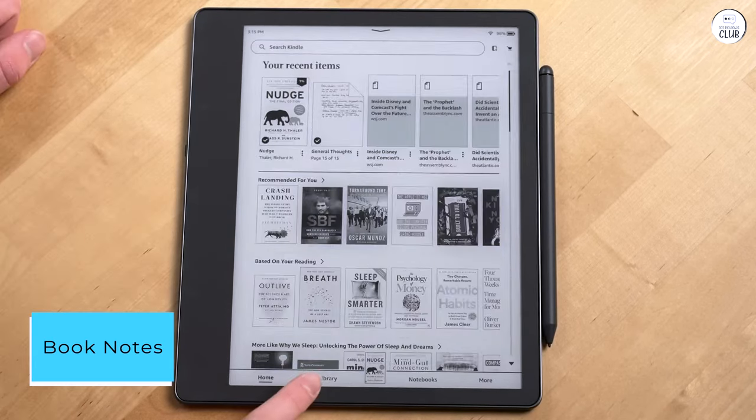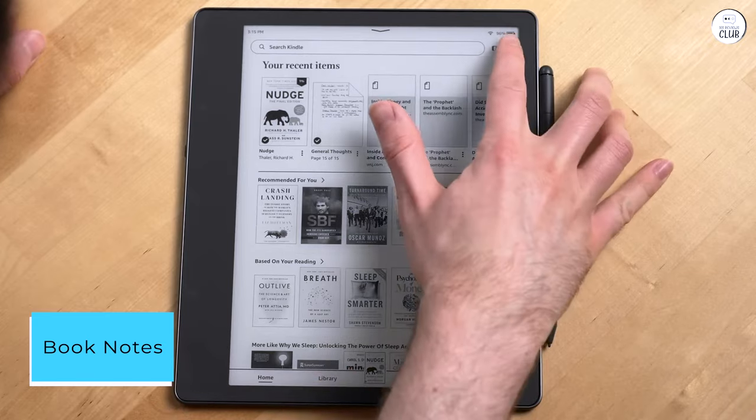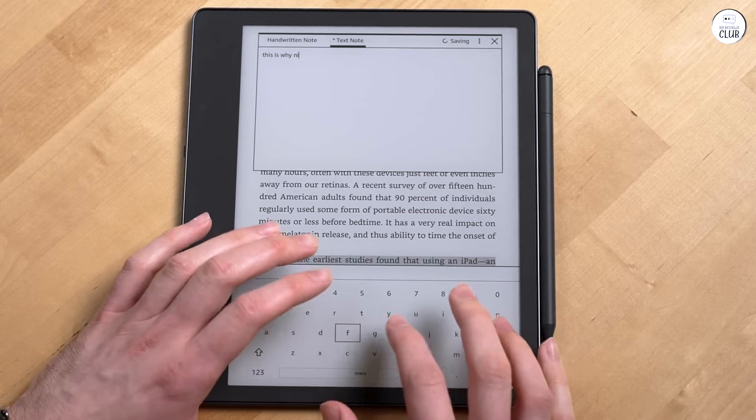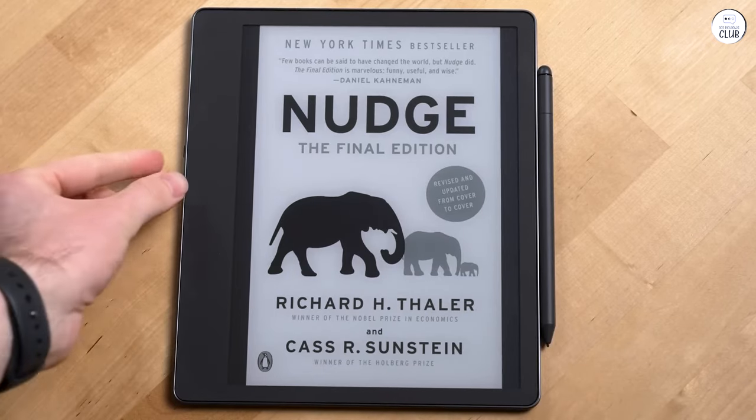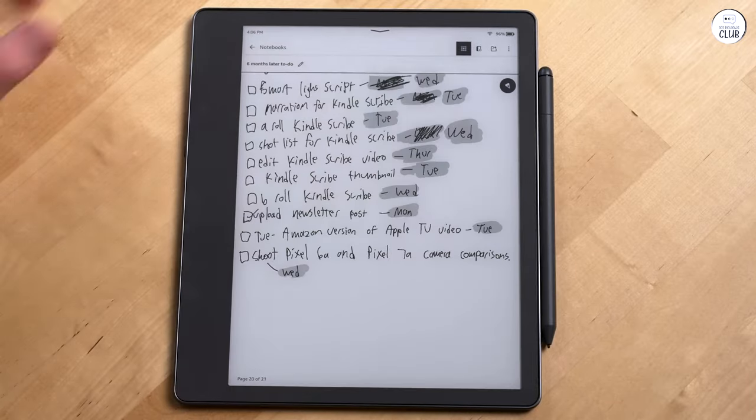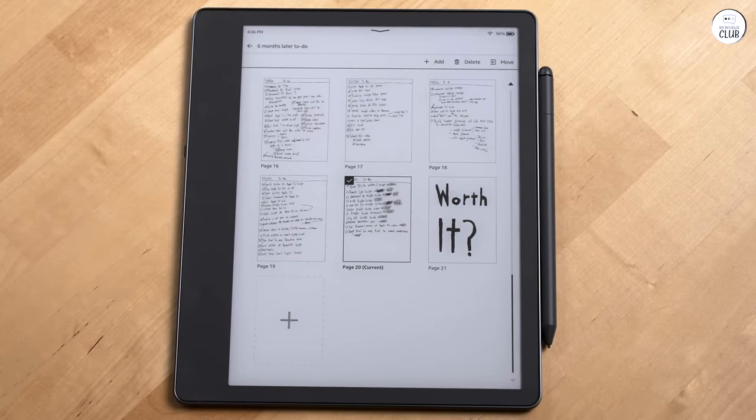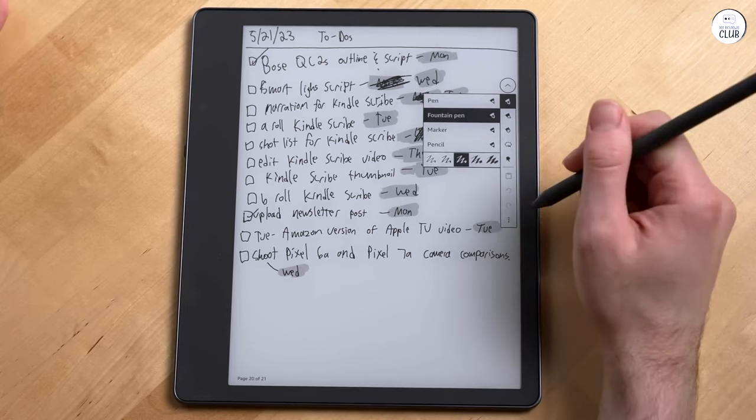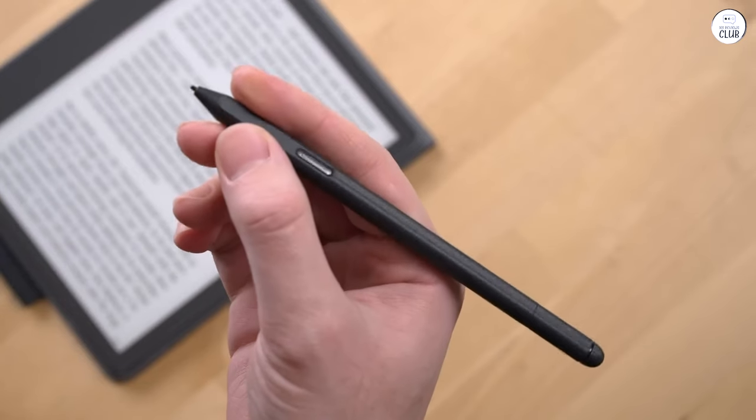Book notes. Others have mentioned not being able to write in book margins, but the notes feature is still nothing to scoff at. For most books, I can tap where I want to make a note, then either handwrite or type with the on-screen keyboard, and it will leave a tiny note icon in that spot, which is easy to access later. This looks cleaner than writing on the book page while still being functional and simple.